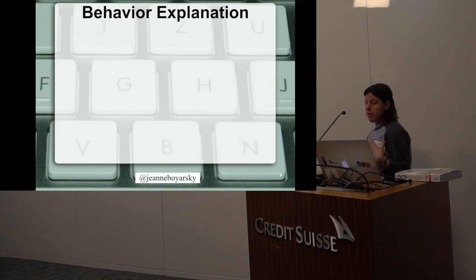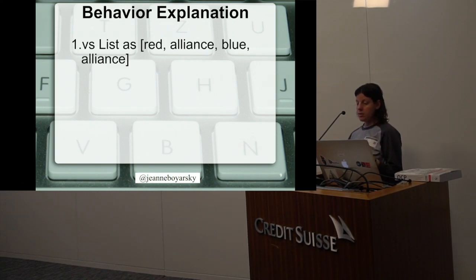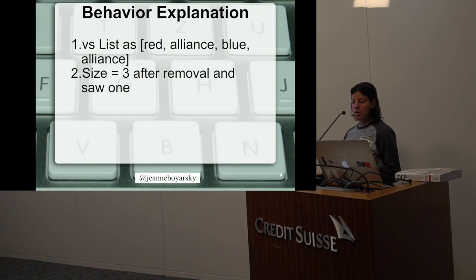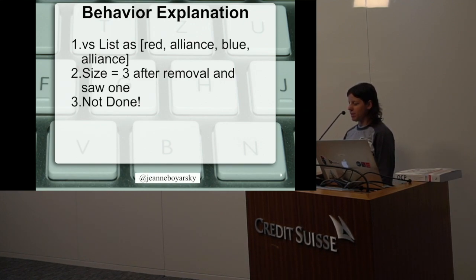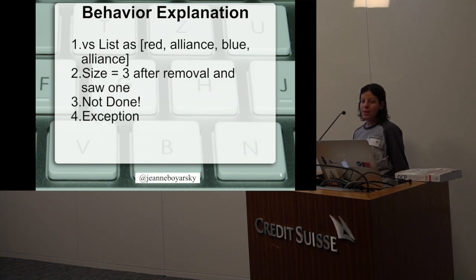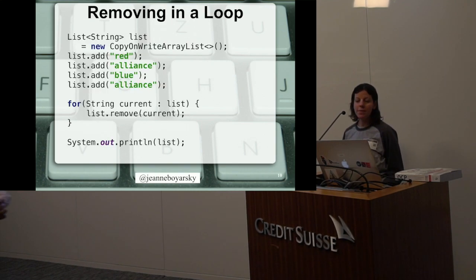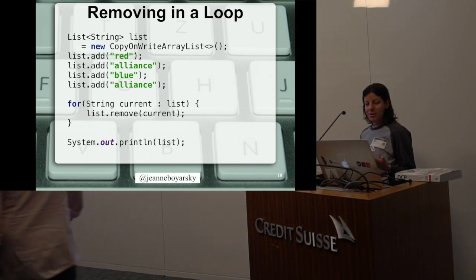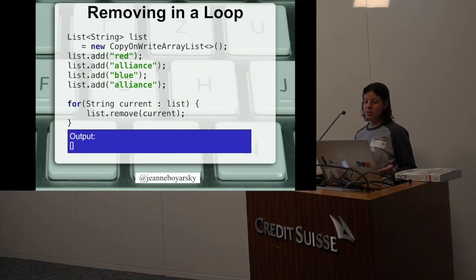By contrast, when we have red, alliance, blue, alliance, it does that first removal — it says, I'm going to remove red per your request. Then it says the size is three, we saw one, and wait a minute — you're trying to trick me and delete stuff from a list I'm iterating through. You can't do that. Which is much better behavior because at least it tells us that something is wrong. So now we know what happens if we try to remove in a loop.